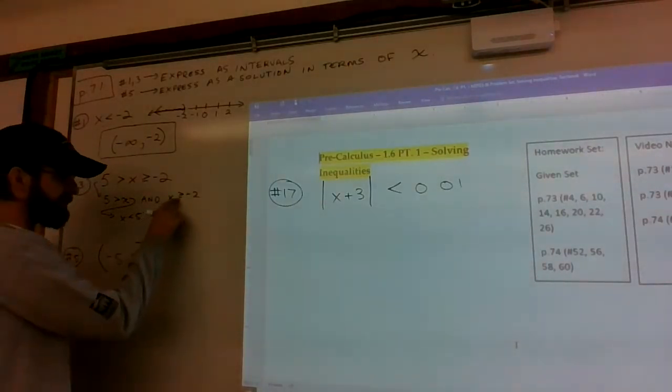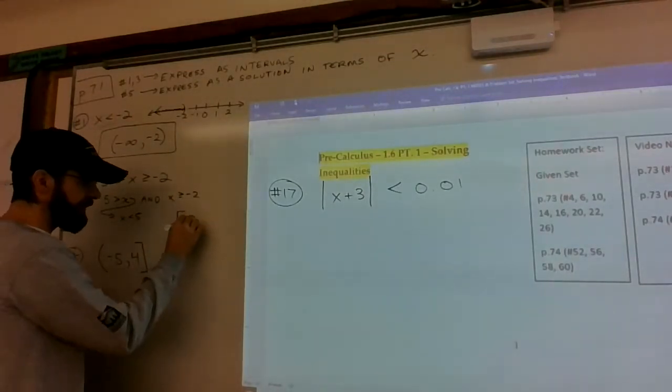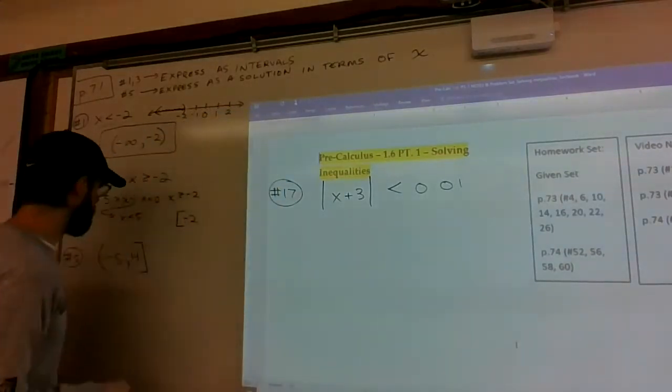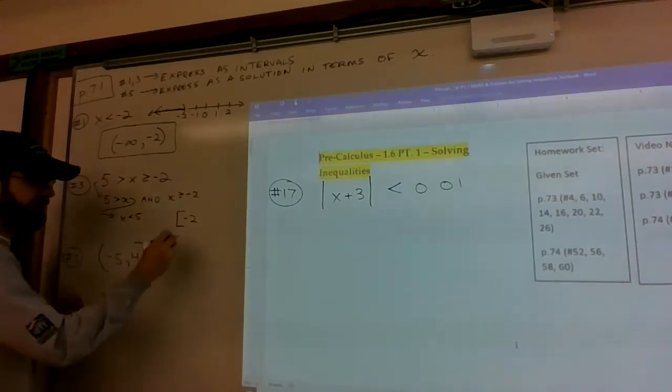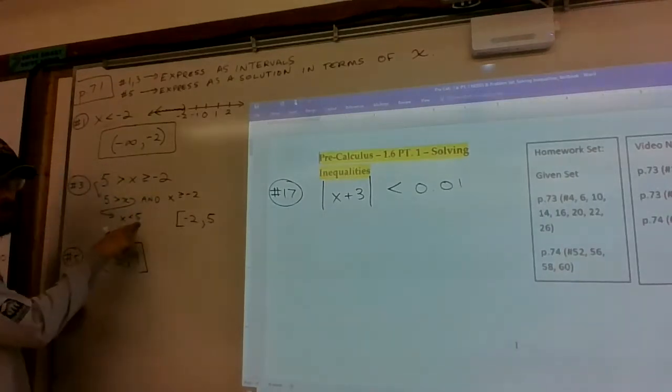So x is bigger than or equal to negative 2. Bracket on negative 2 because it's the leftmost, all the numbers bigger than or equal to negative 2. But also all the numbers smaller than 5. So it's negative 2 to 5, not including the 5.